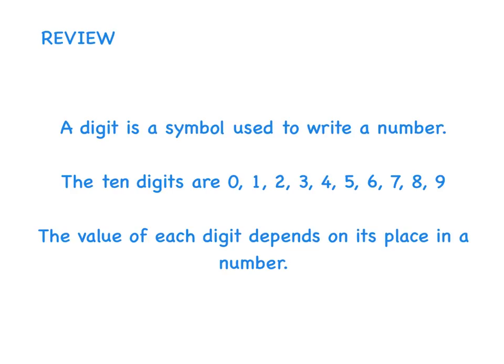First of all, what is a digit? A digit is a symbol used to write a number. The 10 digits are 0, 1, 2, 3, 4, 5, 6, 7, 8, and 9. Notice that the number 10 is not a digit. The value of each digit depends on its place in a number.